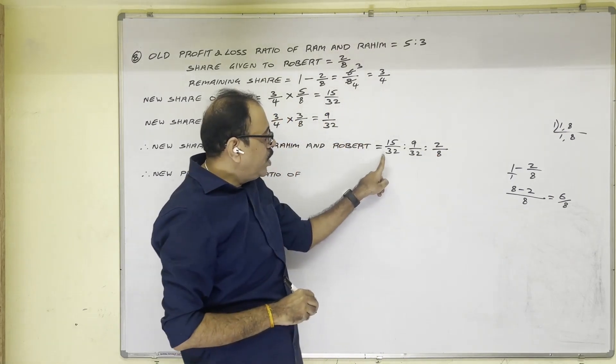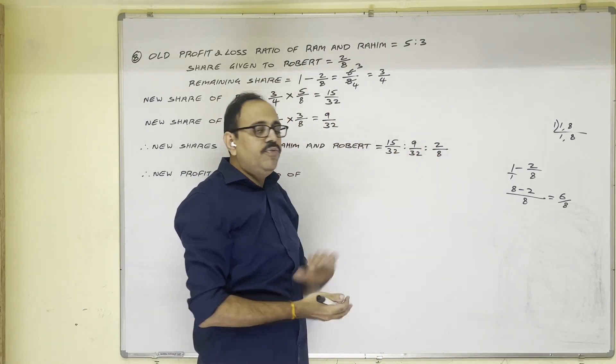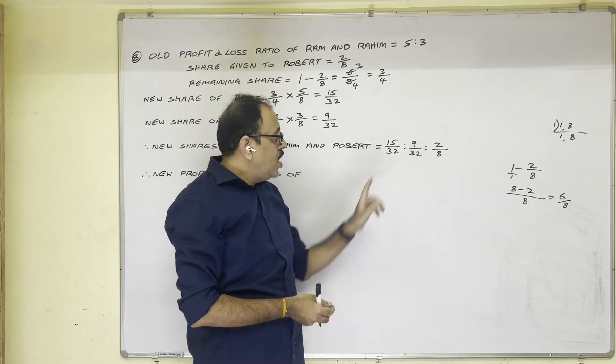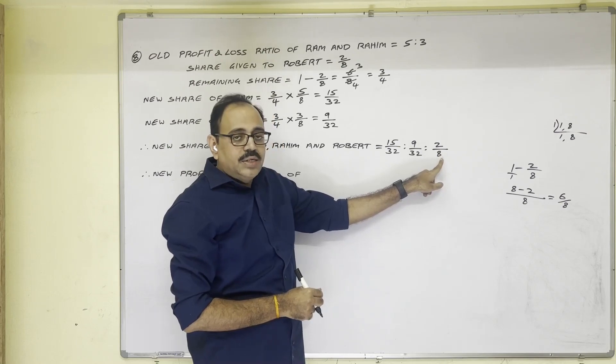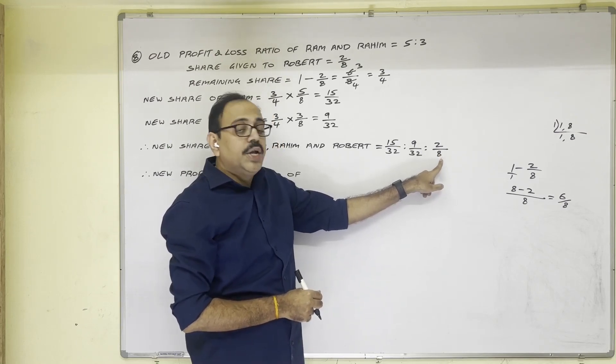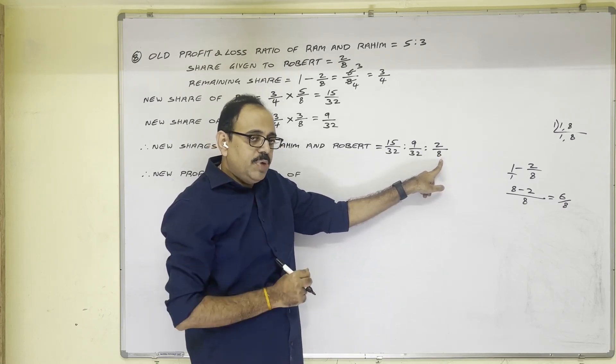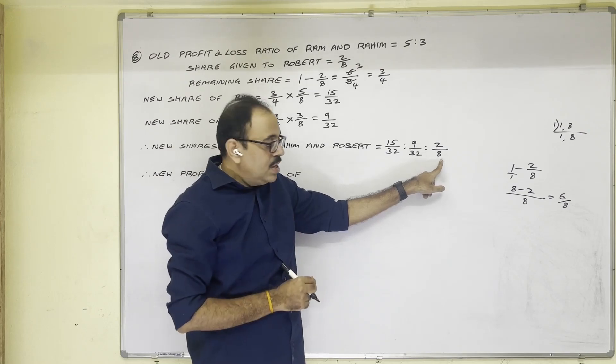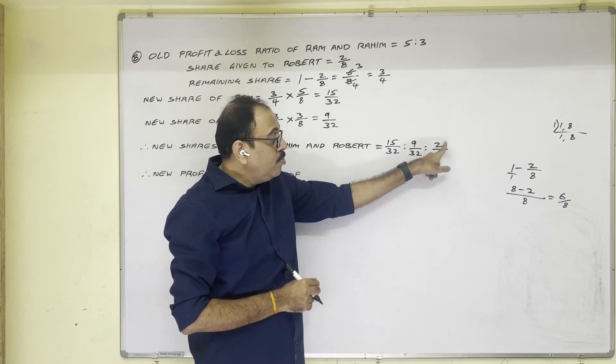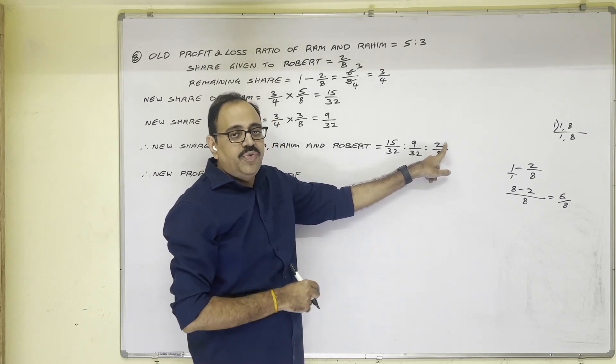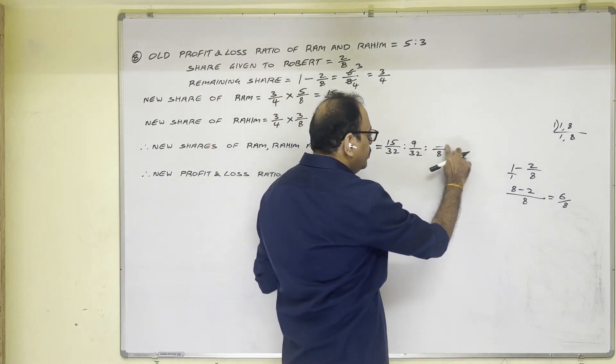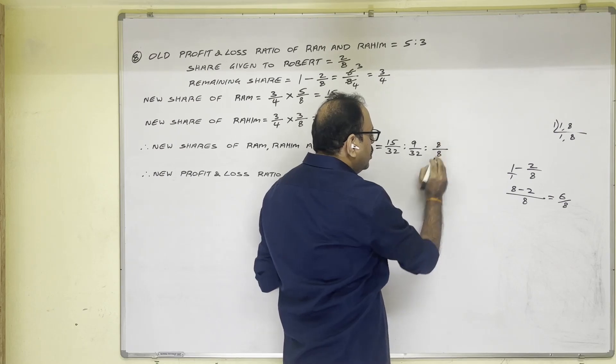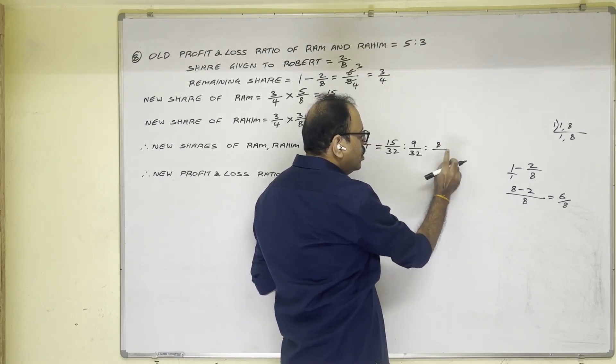So when you write fractions in ratio form, rule is all denominators should be equal. But this is 8, so here I want 32. With which number we should multiply? With the 4 number. Not only denominator, numerator also you have to multiply with the 4. So 4 twos are 8, 4 eights are 32.